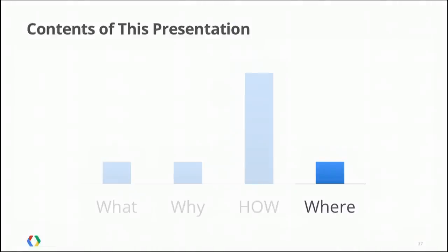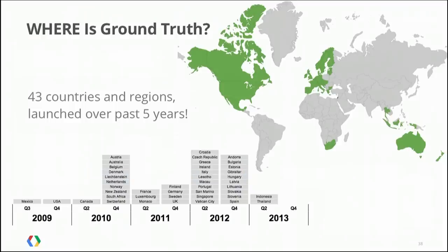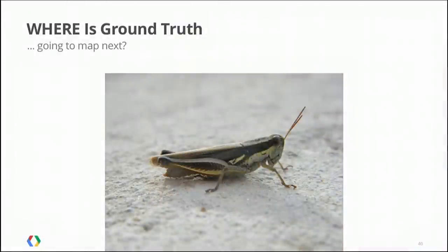That takes care of what, why, and how. Now: where. The green countries are where we've done ground truth — 43 countries and regions launched over the past five years. This is a ridiculous rate of speed for mapping, and we're quite proud of it. The most frequently asked question is where we're going to map next, and unfortunately the answer is silence — we don't like to speculate about future products. What I can say is this is an incredibly efficient mapping machine that we've built. We're not about to turn it off, and these will not be the last countries you hear of.